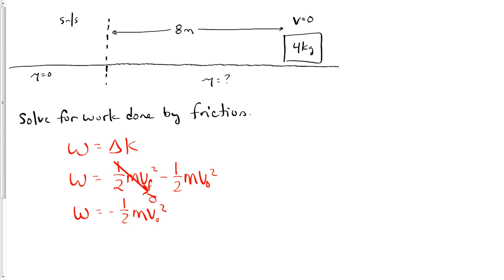The negative indicates that the work done was negative. That means it took energy away from the box. Friction will always be a force which takes energy away because it will always be in the opposite direction of motion.